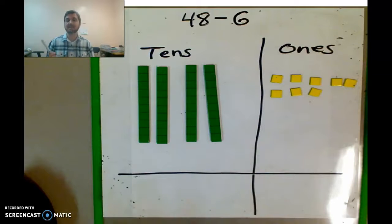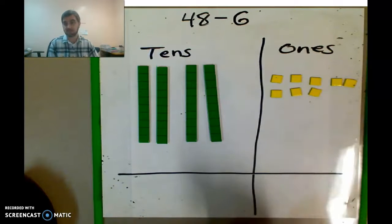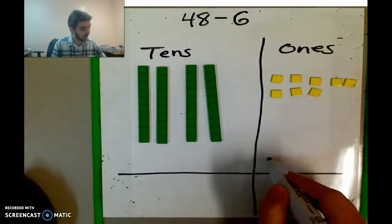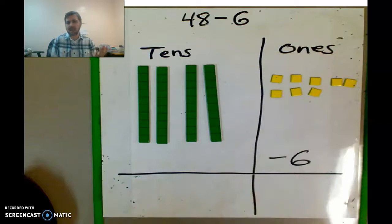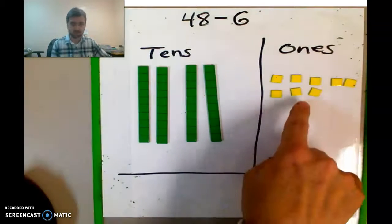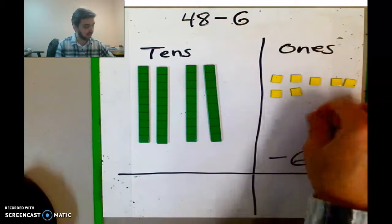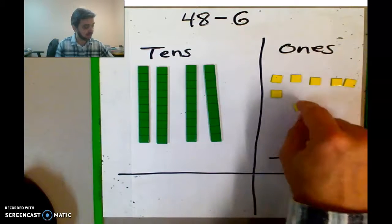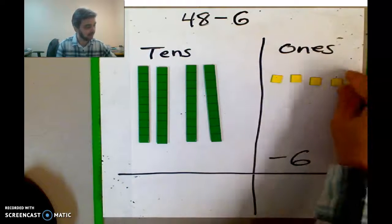Now we're going to subtract 6. So to keep track of how much we're subtracting, we're going to write it right here: minus 6. This is not one of the more challenging problems. All we have to do is take away 6 of the ones. So let's take away 1, 2, 3, 4.